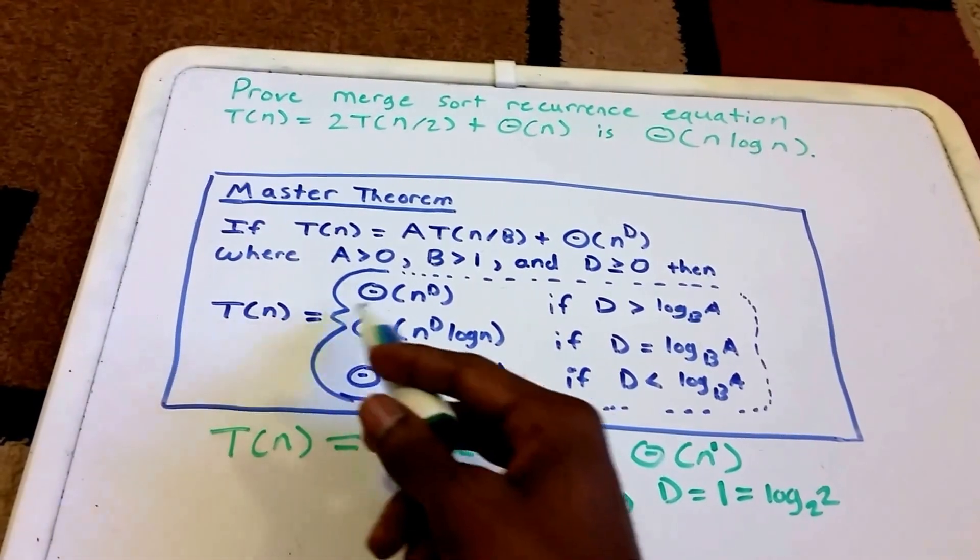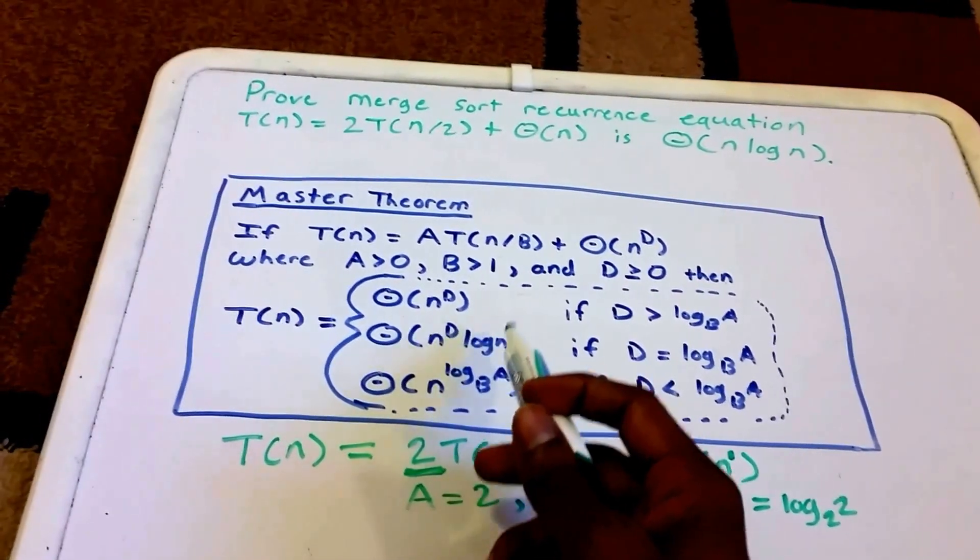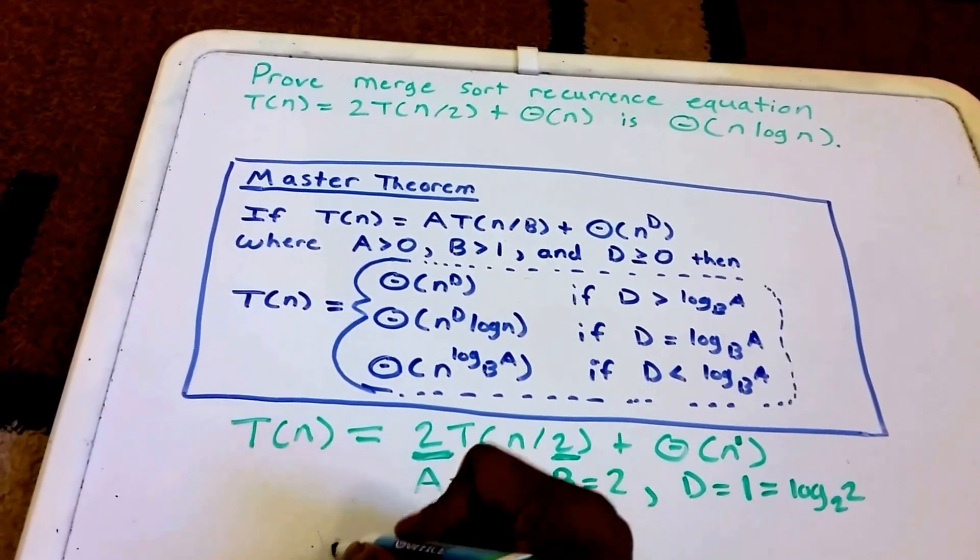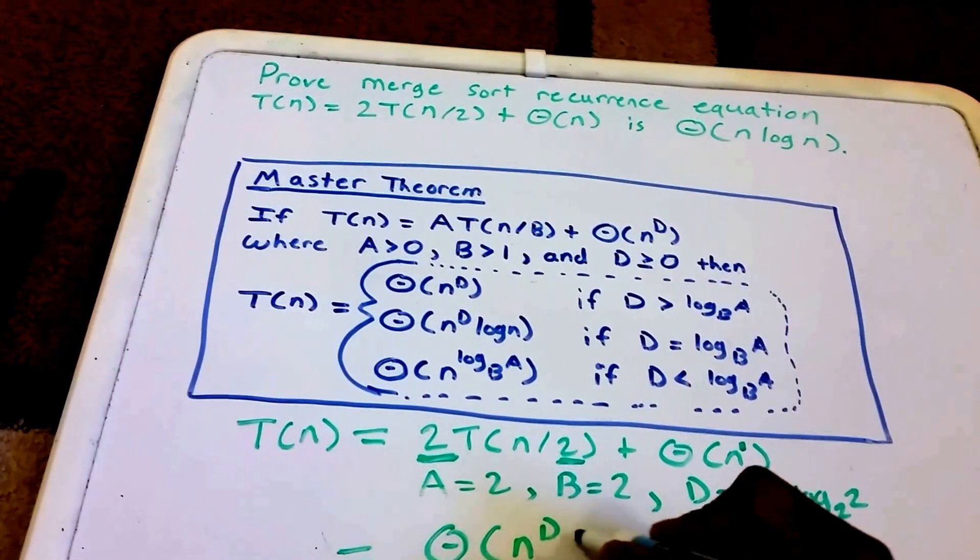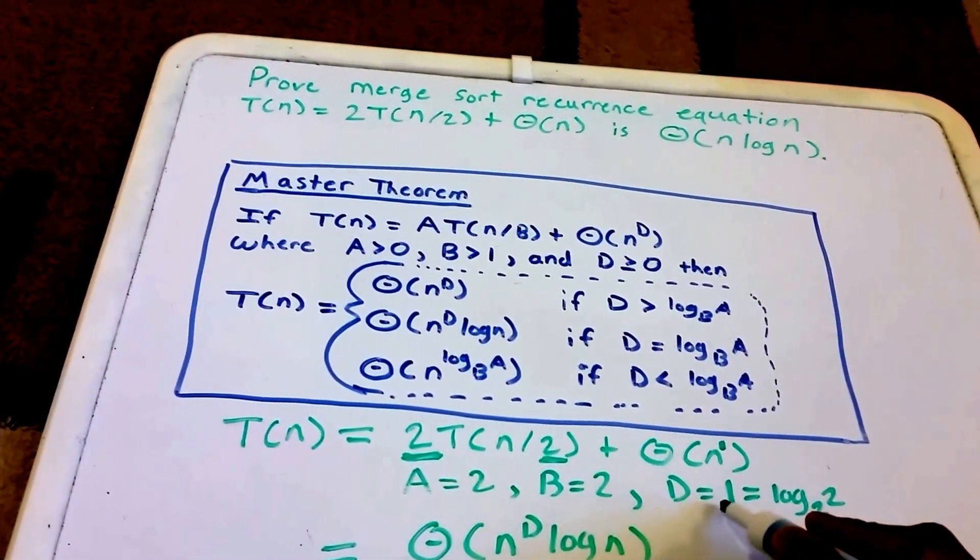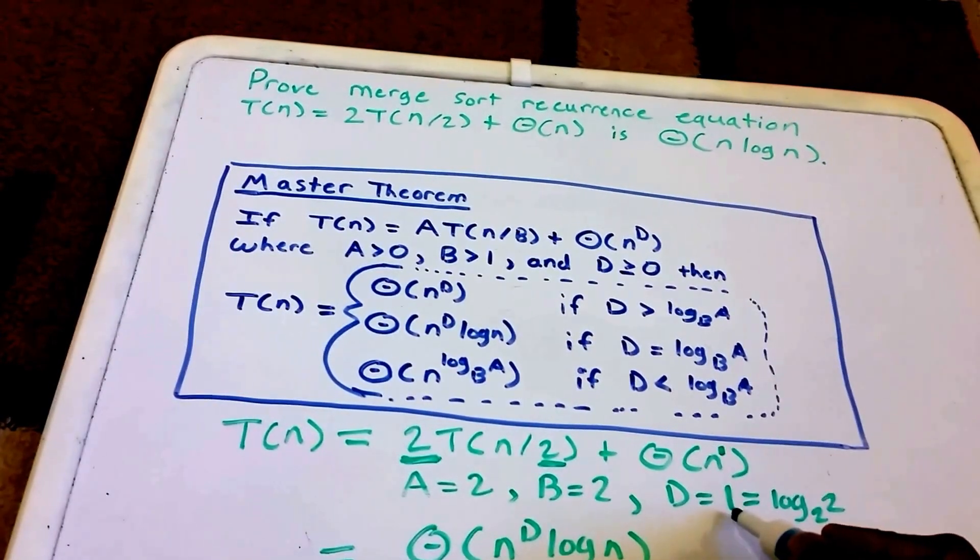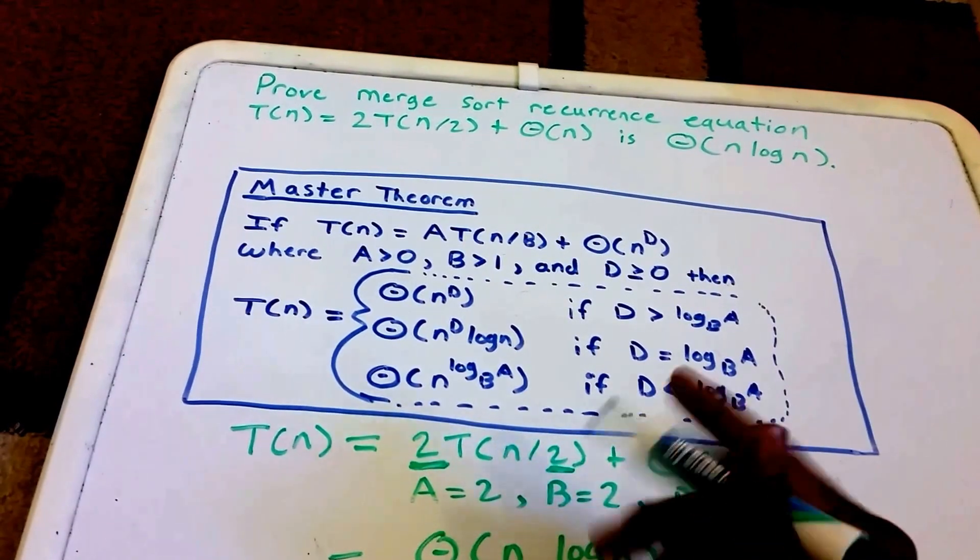So now this is equal to Θ(n^D log n). And what is our D value equal to? Well, it's just equal to 1, so we can replace this D here with the value 1.